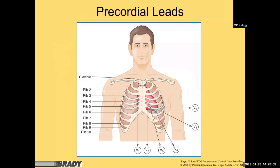Your clavicle represents where rib one would be. The fourth intercostal space is just below the fourth rib — place V1 on the patient's right side and V2 to the left of the sternum. Skip to V4, which goes in the fifth intercostal space just below the fifth rib at the mid-clavicular line. V3 should fall directly between V2 and V4, equally spaced. Skip to V6, placed at the lateral aspect — fifth intercostal space, mid-axillary line. Then V5 goes between V4 and V6, making V4, V5, and V6 in a relatively straight line.